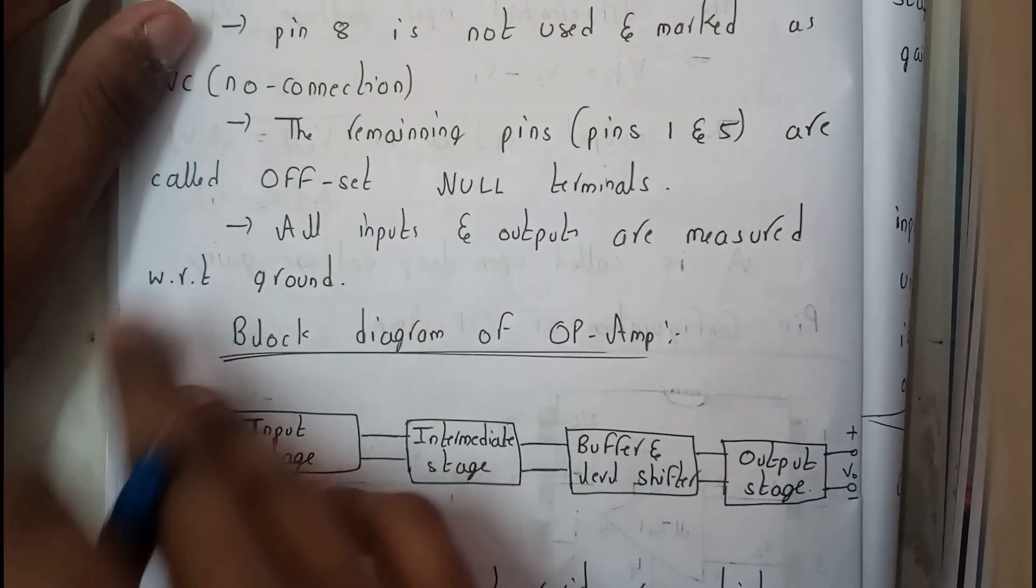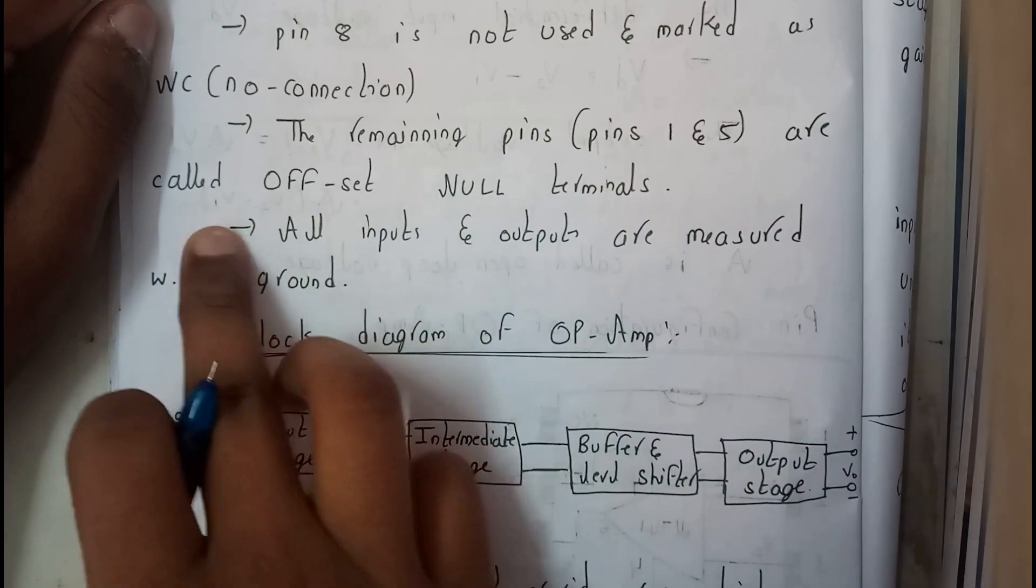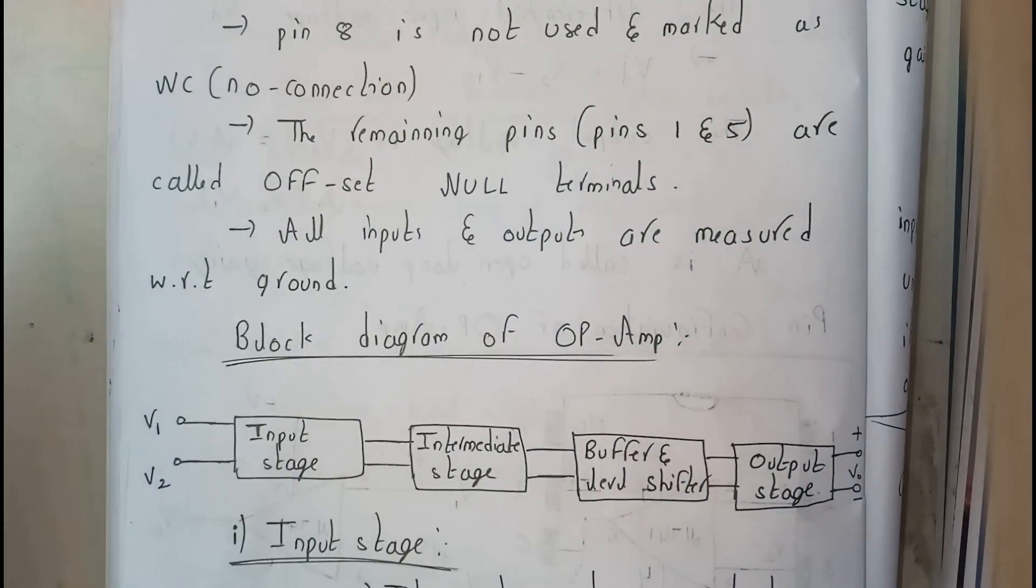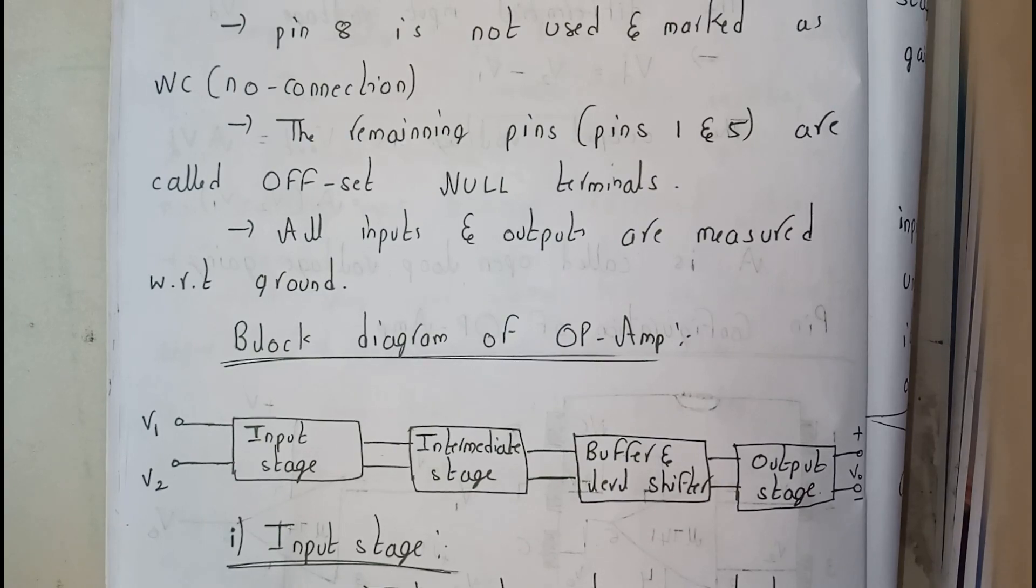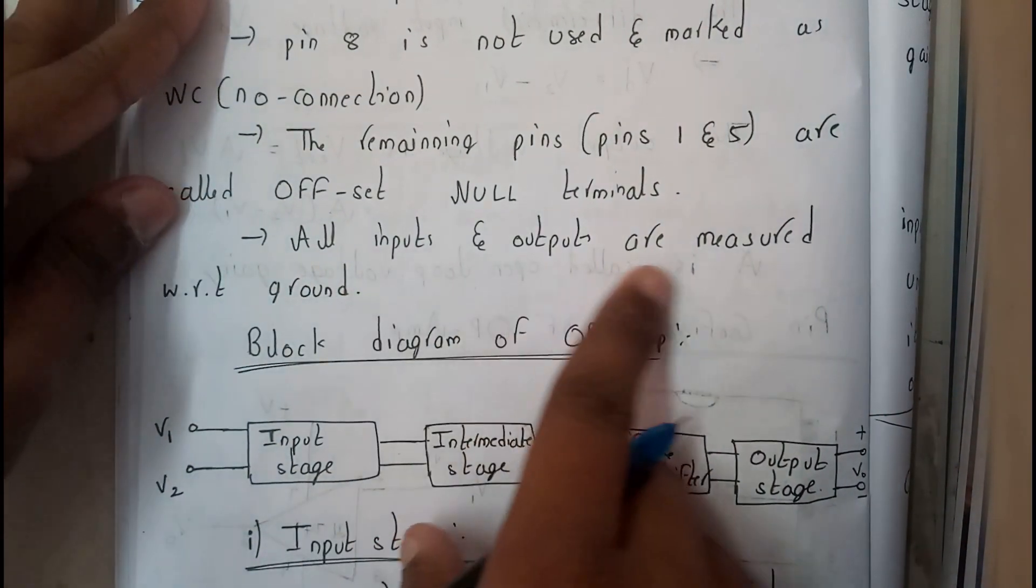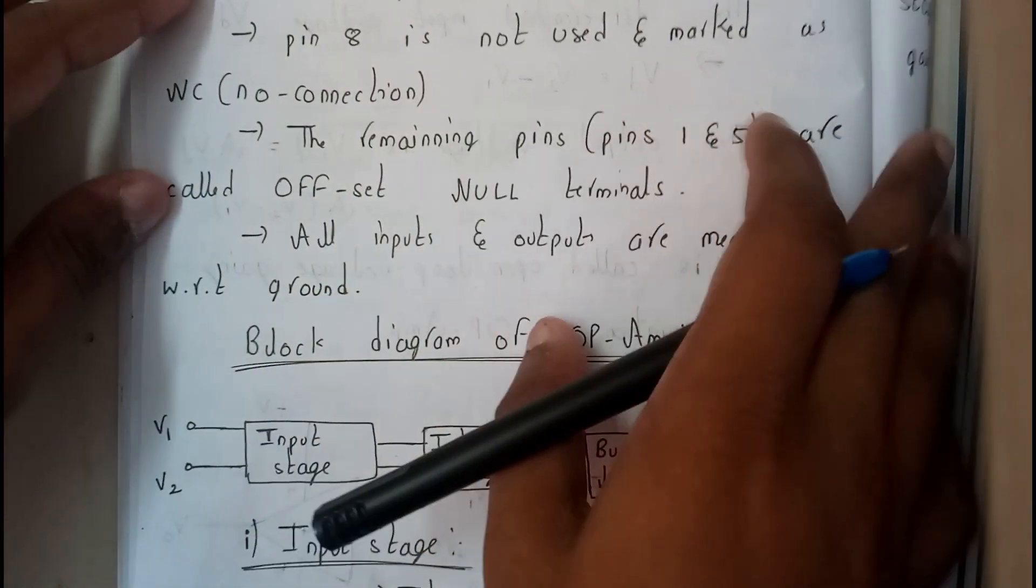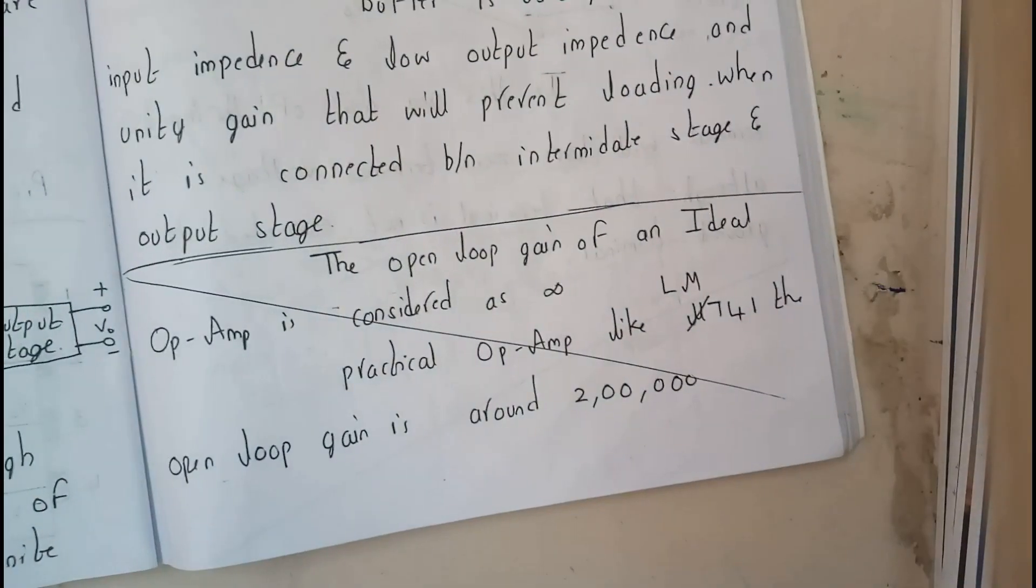So the remaining pins, pin one and pin five, are called offset null terminals. These are not used in this circuit, but they will be used in another creation of different types of materials. So all inputs and outputs are measured with respect to ground.